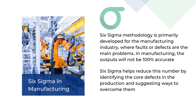In manufacturing, the outputs will not be 100% accurate. There are certain tolerances accepted in production for a certain number of defects. The more this number, the more the loss occurred in production. Six Sigma helps reduce this number by identifying the core defects in the production and suggesting ways to overcome them.